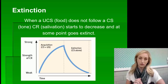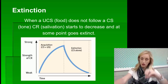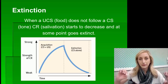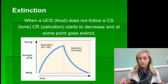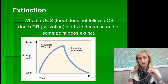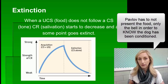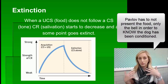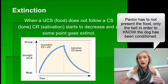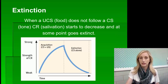Let's say you're one of Pavlov's dogs. They do bell, food, bell, food, bell, food, and the dog is salivating every single time. Eventually, they need to present only the bell — only the conditioned stimulus — in order to know that conditioning has occurred. As Pavlov or whoever is doing the conditioning, we have to confirm conditioning has occurred by not presenting the UCS. We ring the bell; if the dog salivates, we know he's conditioned.